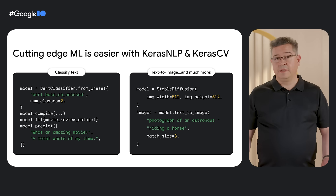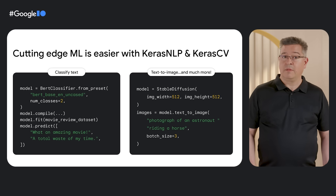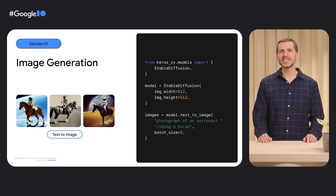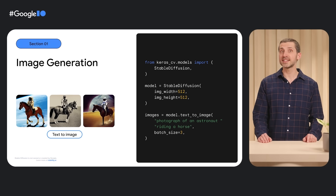Computer vision and natural language processing are some of the most popular applications of AI technology. Keras has some really easy-to-use APIs to help you build those models and applications. In his Applied ML with Keras session, Google engineer Jonathan Bischoff shows you how to build generative AI solutions for images and text.